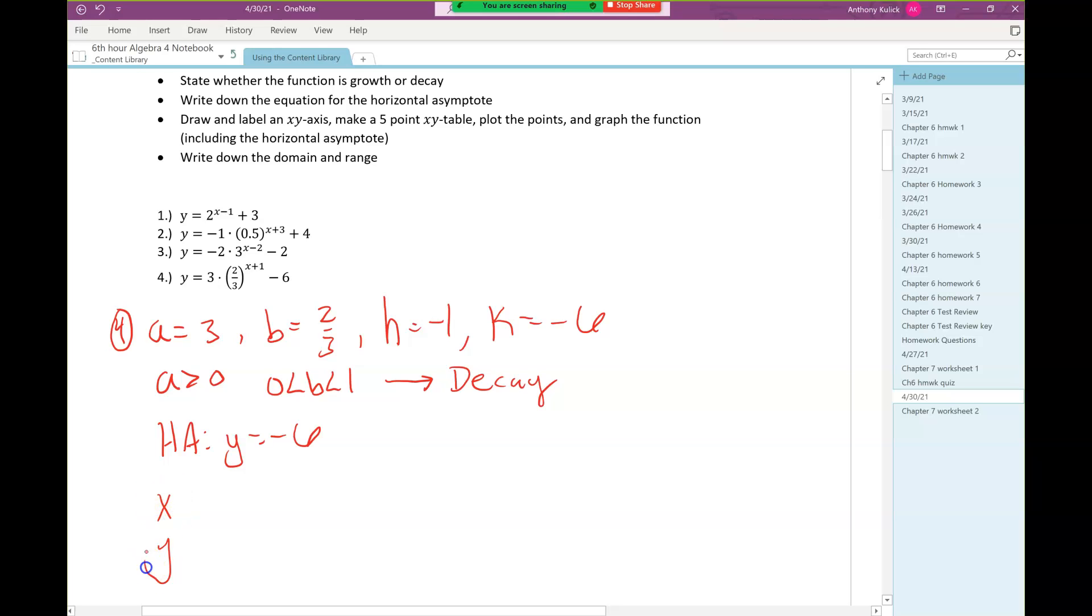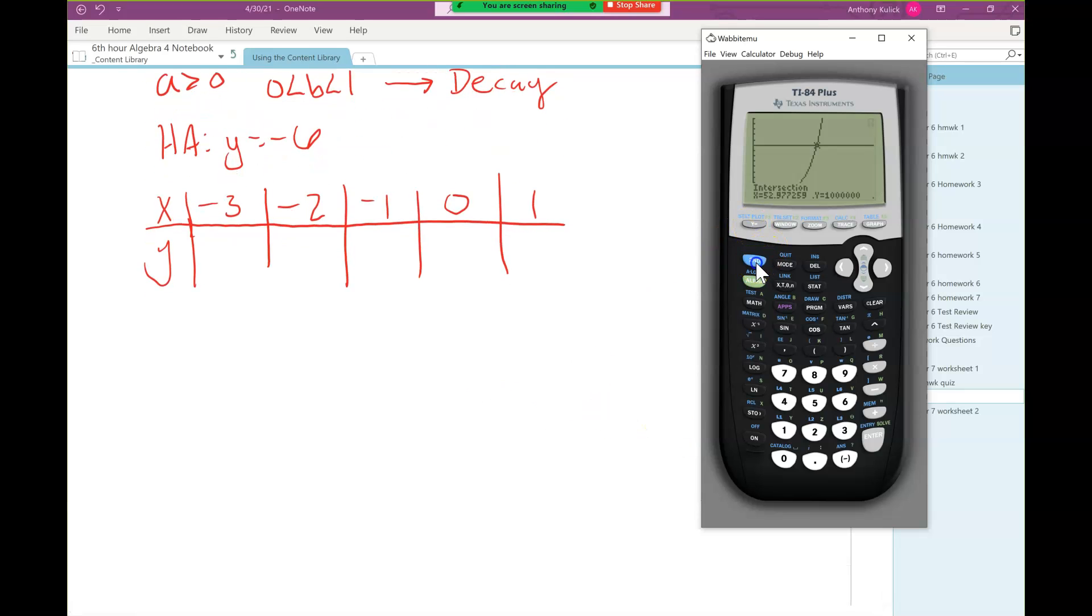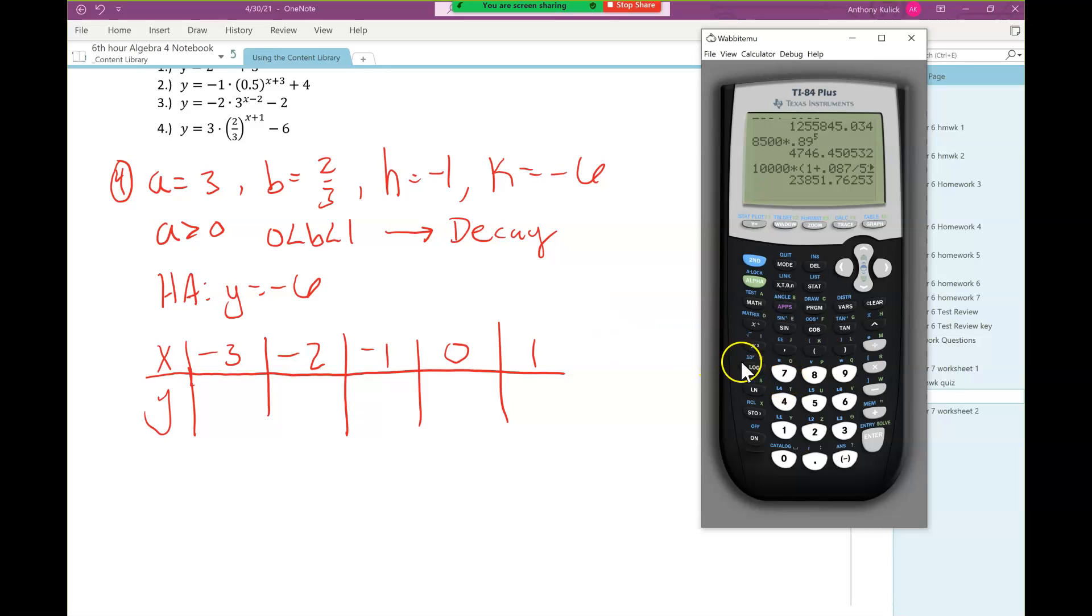Then I need to make my table. So I make my table by doing h minus 2, h minus 1, h minus 0, h plus 1, and then h plus 2. To find the corresponding y values, I'm going to plug those into my calculator.